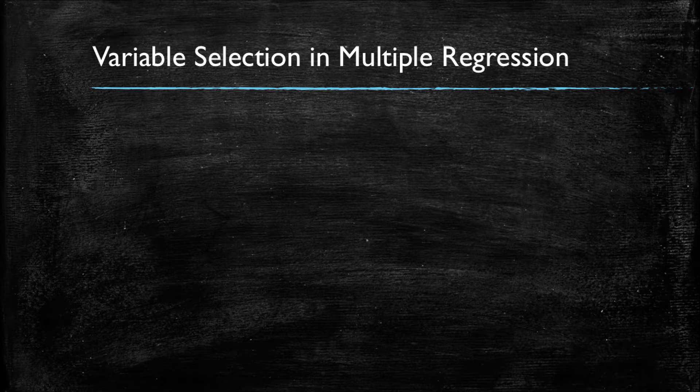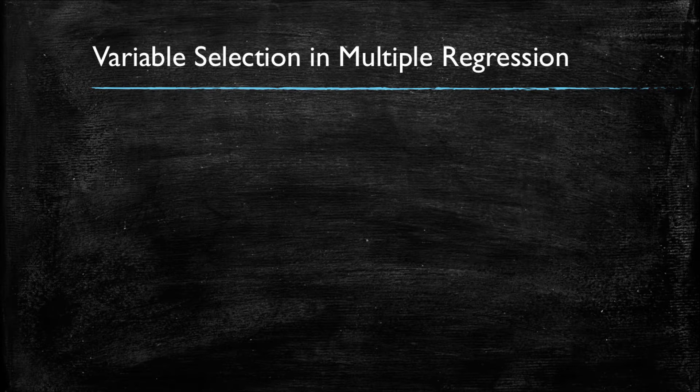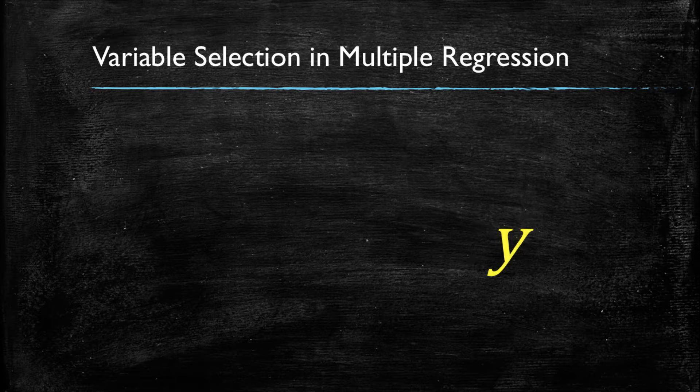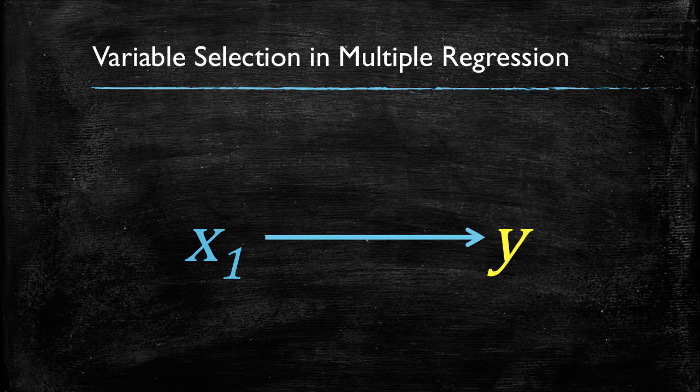When we were performing simple linear regression, where we only had one x, we were trying to explain the variance in the dependent variable by using a single independent variable, in this case x1, and it was very easy to assess if this variable was worthwhile having in a model or not because, essentially, it was our only variable.